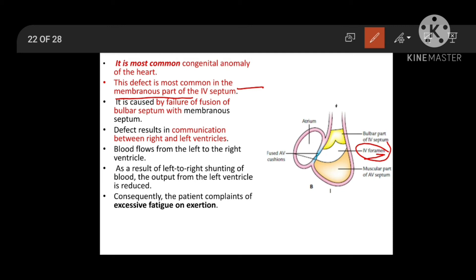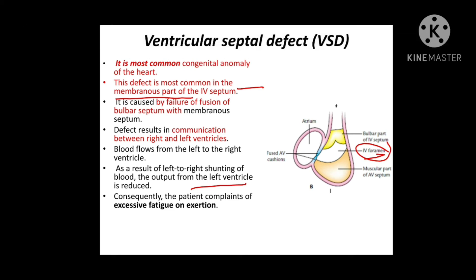After birth, pulmonary circulation starts, so pressure in the left ventricle is more than the right ventricle. This causes blood to flow from left to right ventricle. Because of this shunting, cardiac output from the left ventricle is reduced, leading to fatigue on exertion. If VSD is very small there will be no symptoms, but if VSD is large enough, there will be fatigue on exertion.